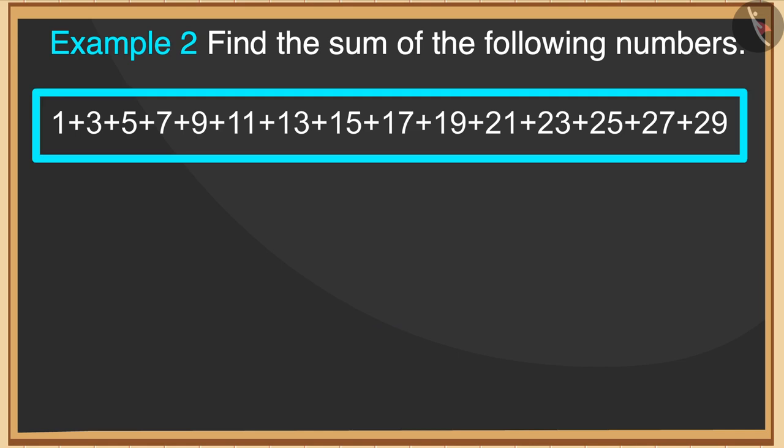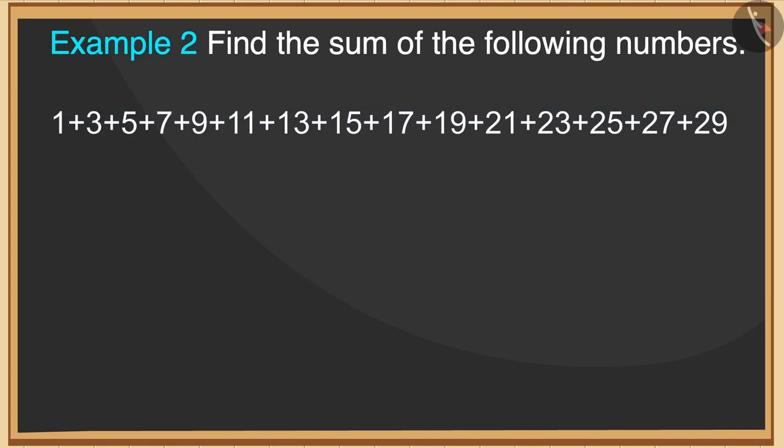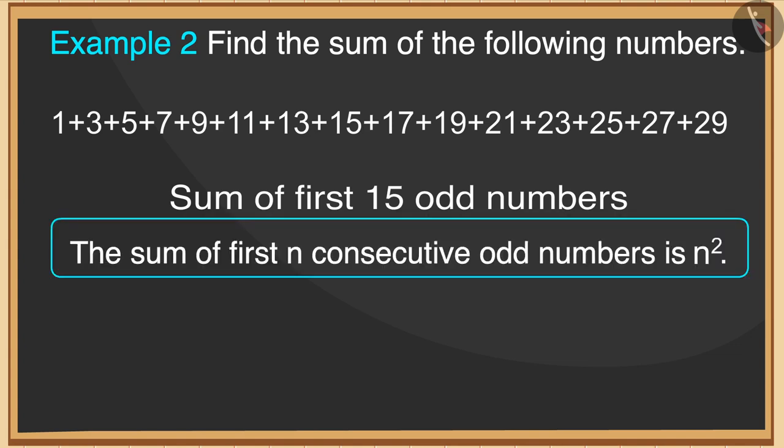If we look at the sequence of numbers carefully, we will observe that it is the sequence of the first 15 odd numbers. We know that the sum of the first n consecutive odd numbers is n square.